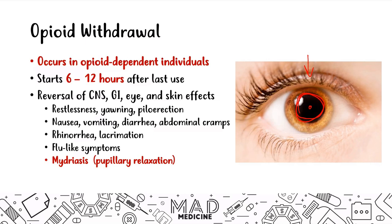Patients in opioid withdrawal are also going to be very agitated and aggressive, which is the opposite of the CNS depression seen during intoxication. Those are the main opioid withdrawal symptoms.